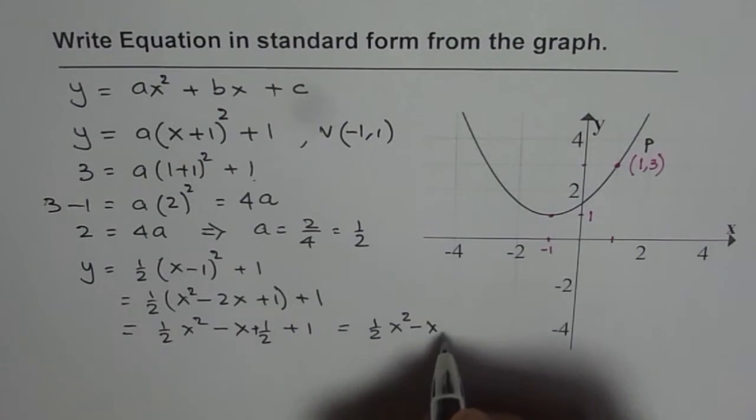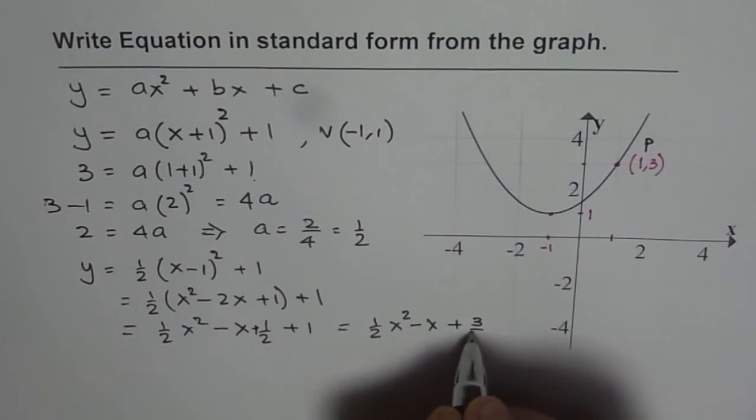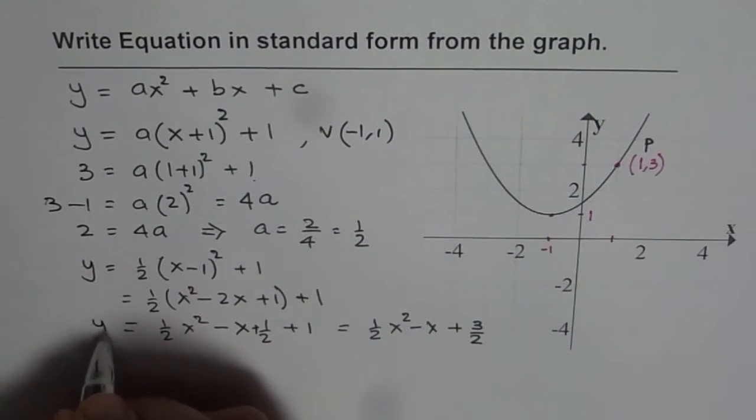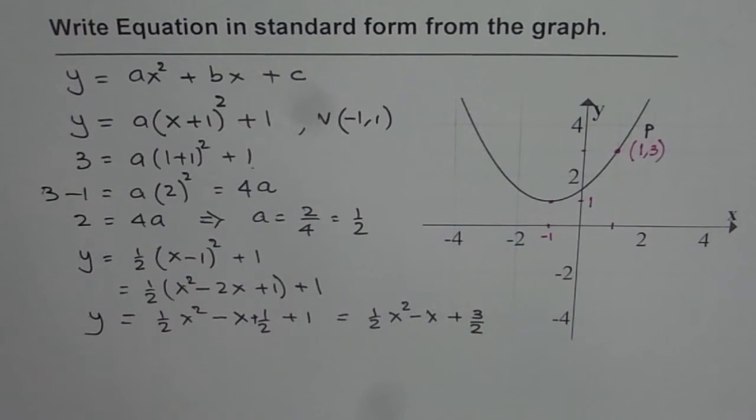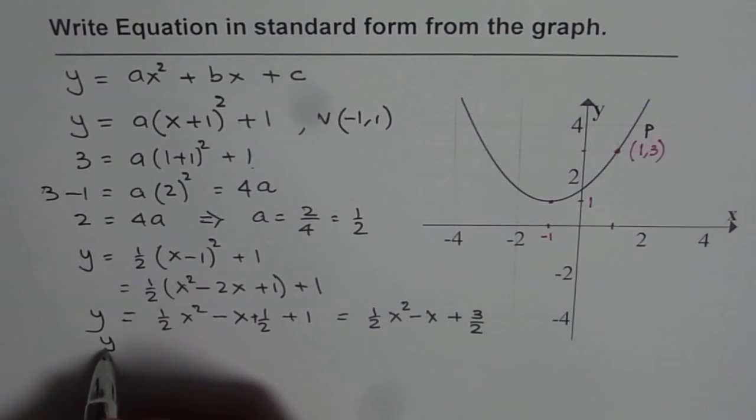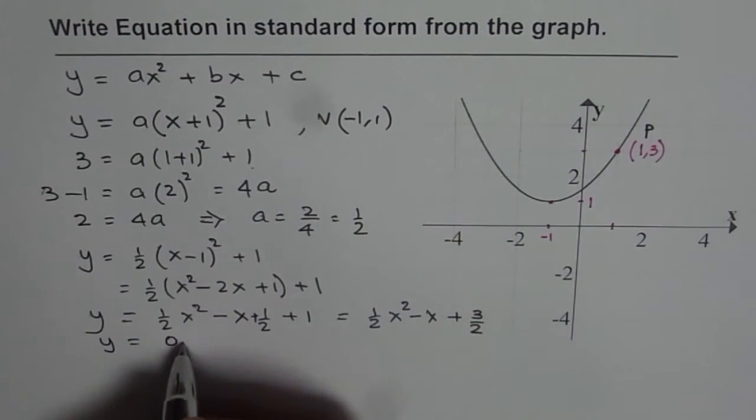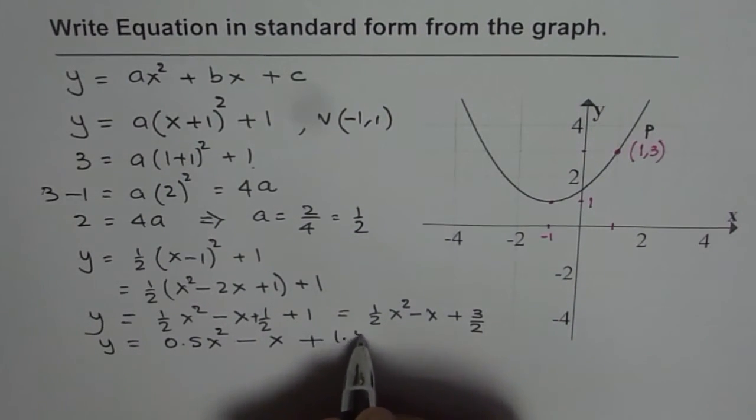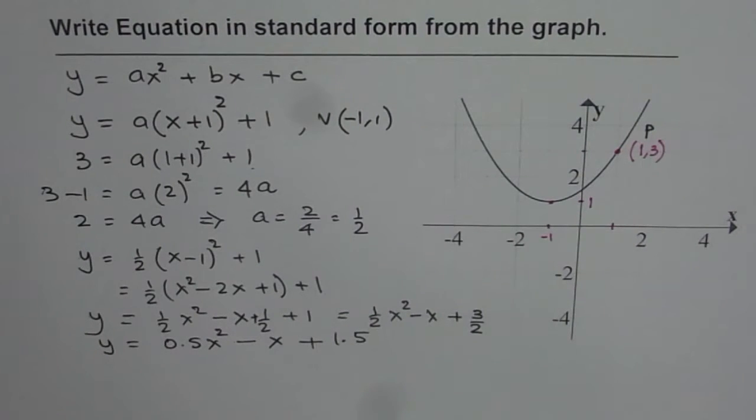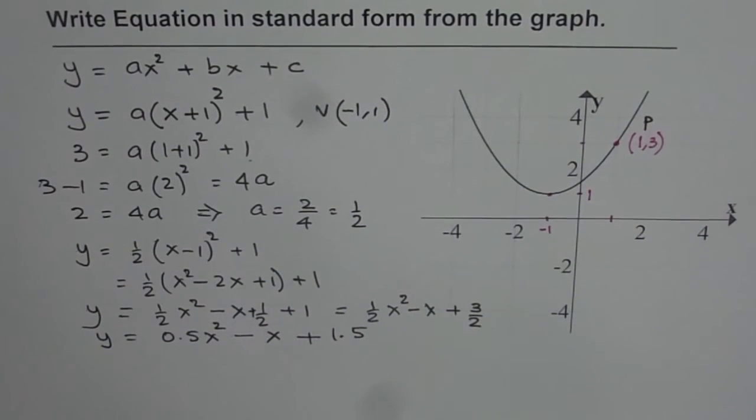So we'll write 3 over 2. So that is the equation of the parabola in standard form. You could write it in decimals if you want to. That is, we could write this as y equals 0.5x squared minus x plus 1.5. So that is how you get your equation in standard form. Thank you.